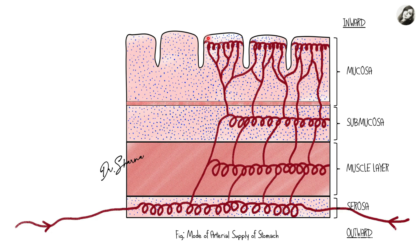The epithelial tissue layer is avascular and the connective tissue layer is vascular. The connective tissue layers contain the blood vessels, and the epithelial tissue gets its oxygen supply and nutrition by diffusion from the arteries of the underlying connective tissue. So when drawing the arteries, we draw them up to the lamina propria, keeping in mind that the arteries will never penetrate the overlying epithelial tissue. The blood vessels reach up to the connective tissue only.